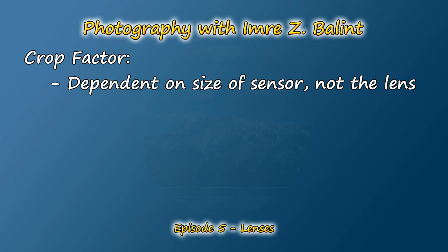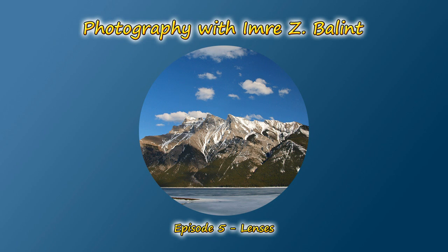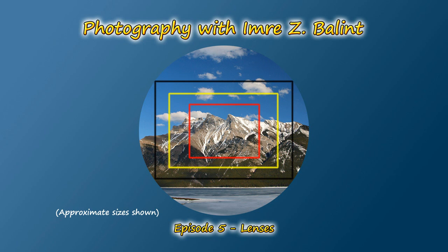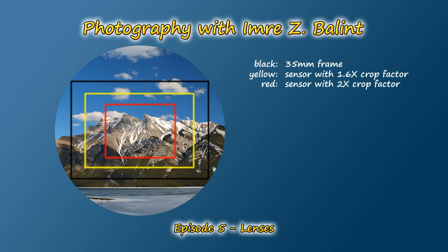To visually demonstrate the crop factor, here's an image. The circle represents what a lens would project onto a frame of film or a digital sensor — technically this picture would be upside down, but for comfortable viewing I've kept it oriented more normally. The black rectangle within this circle represents the piece of an image that would fall onto a frame of 35 millimeter film, whereas the yellow and red rectangles represent sensors at 1.6 and 2 times crop factors respectively. The focal length of the lens in this example is the same for each sensor — in other words, we're using the same lens. Let's give this lens an arbitrary focal length of 100 millimeters.